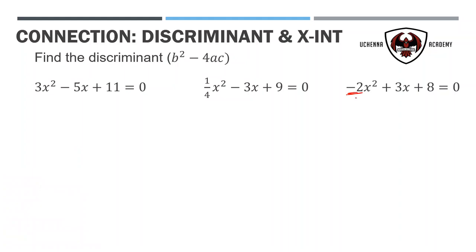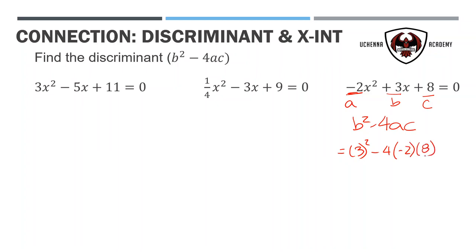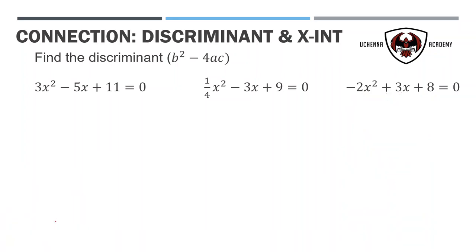In the last case, we're going to figure out what the discriminant is. Negative 2 is our A, positive 3 is my B, and plus 8 is my C. B squared minus 4ac: 3 squared is 9, minus 4 times A, which is negative 2, times C, which is 8. Negative 4 times negative 2 is positive 8, times 8 is positive 64. So the discriminant is a positive number — 9 plus 64. Those are my three cases: discriminant less than 0, equal to 0, and greater than 0.